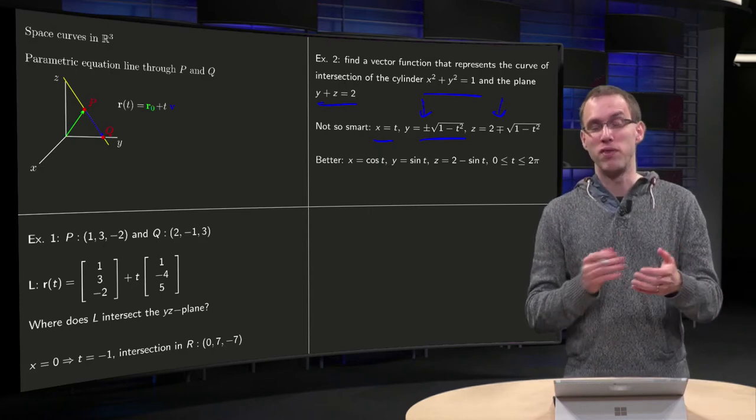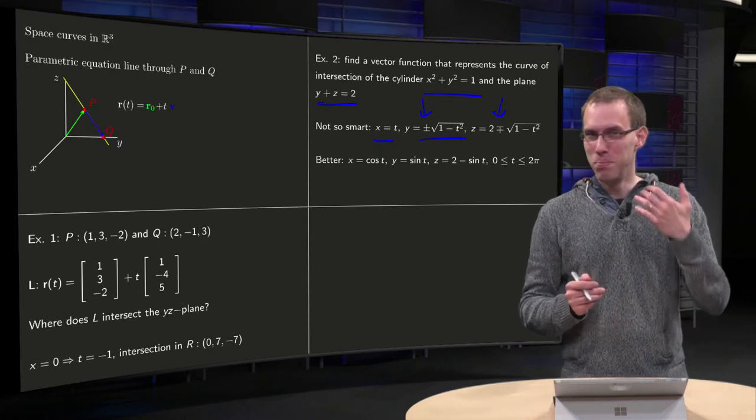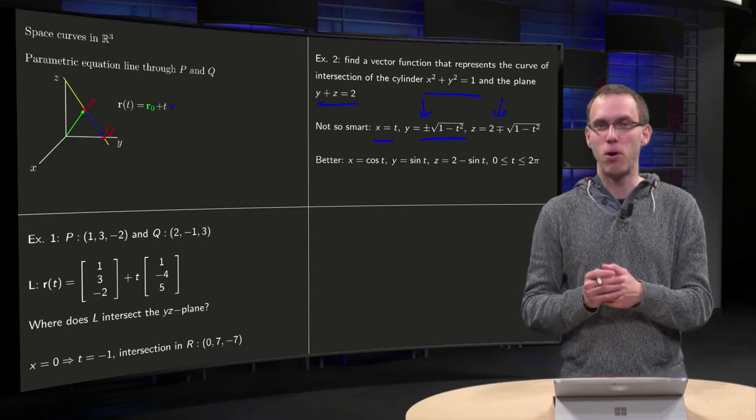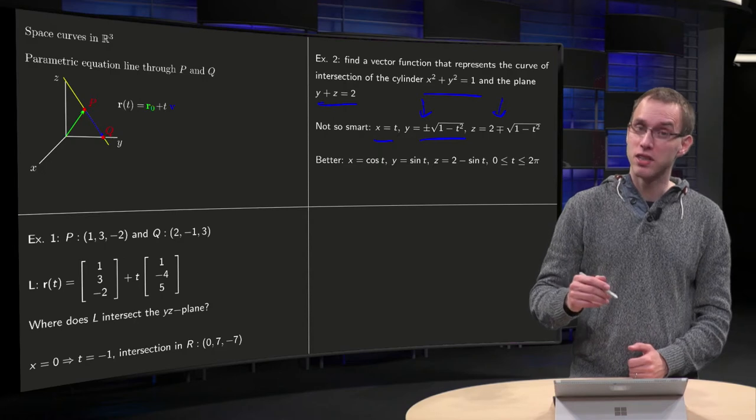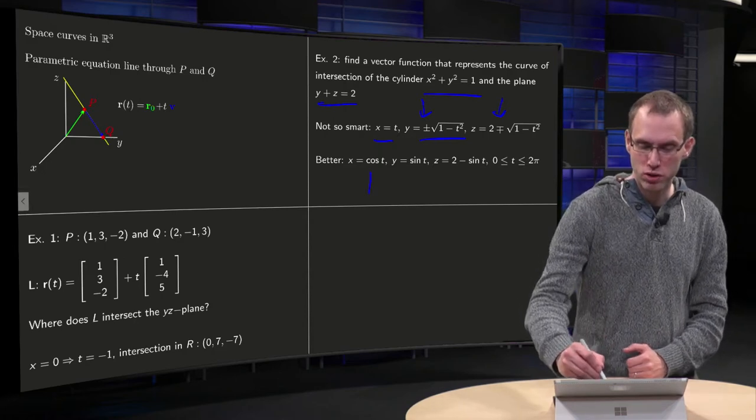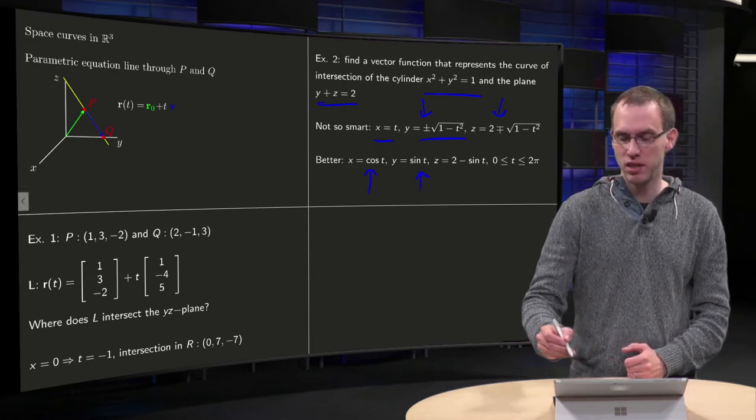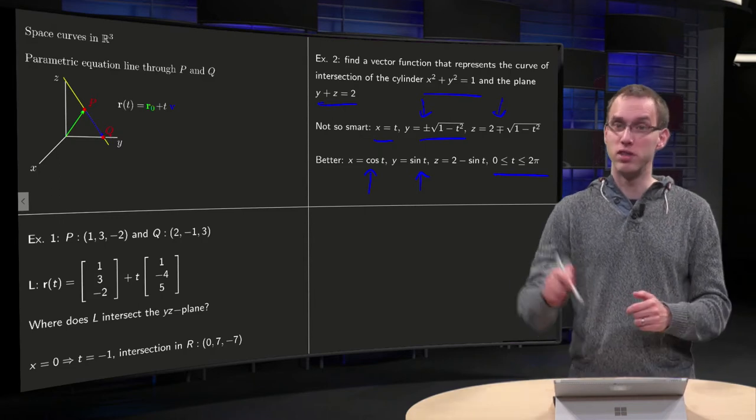Well you see x squared plus y squared equals 1, and you should immediately think of something like polar coordinates, and that is smarter. You can use x equals cosine t and y equals sine t, where you just let t run between 0 and 2π.